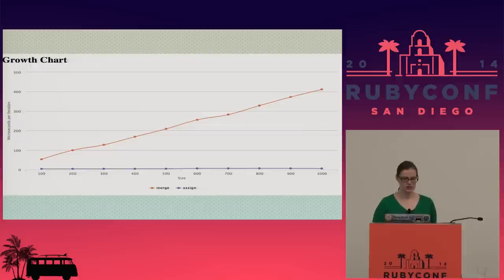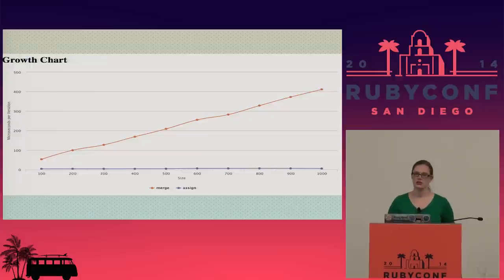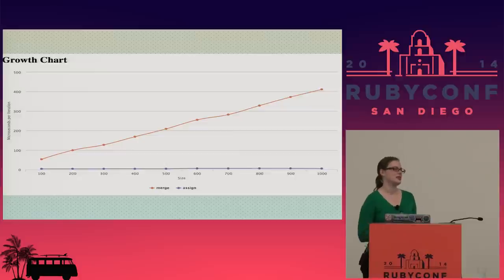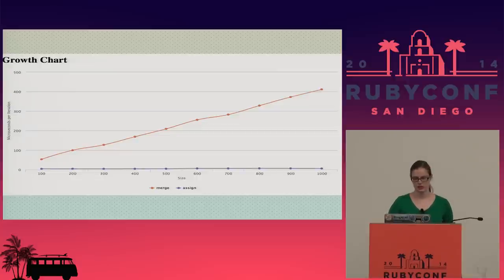Using benchmark-bigO, I calculate what happens when running `merge` versus direct assignment. It becomes clear why those two things were running in vastly different times. Direct assignment is constant, while `merge` is linear, because under the covers `merge` is allocating a brand new hash every single time it runs through. And as we know, allocating an object in Ruby is not fast. So by iterating `merge` over and over again, we were compounding that extra cost.